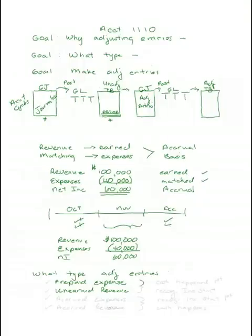Both of these adjusting entries have something in common, and that is cash happened in our example before recognition. Cash happens first, and recognition on the income statement, I'm going to abbreviate recognition on the income statement, happens at a later time. Both of these are prepaid type of entries. We prepaid some expenses and people prepaid us some revenue.